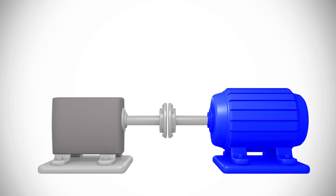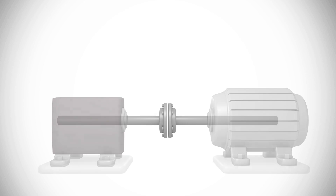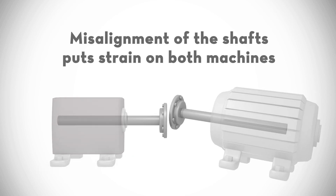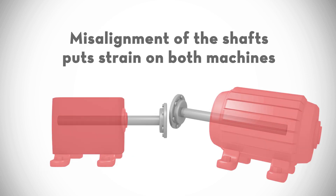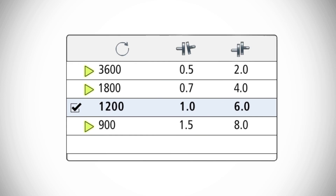The shaft in the motor or engine rotates and drives the shaft in the pump or other driven machine. Misalignment of the shafts puts strain on both the motor and the pump. It can damage the bearings, the couplings, and other machine components. For this reason, manufacturers of rotating equipment have established tolerances defining the maximum acceptable levels of angular and offset misalignment for their machines.